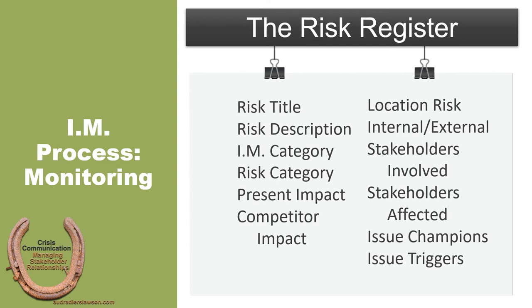Fifth, present impact. This asks a simple question: is the issue presently affecting the organization or likely to affect it within the next six months? Simple yes or no answer on that. Sixth is competitor impact. Is this presently affecting one or more of our competitors? Again, just a simple yes or no. Seventh is location risk. What operational locations are likely to be directly affected? Eighth, internal or external dynamic. Who is primarily affected? Is that internal, external, or both?